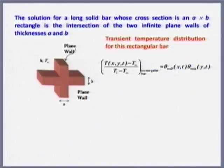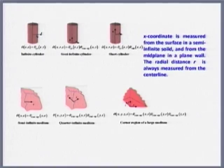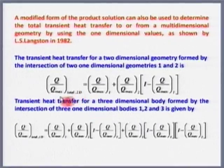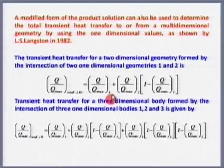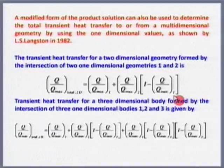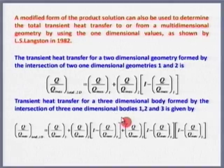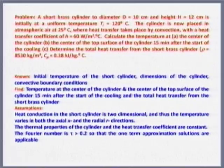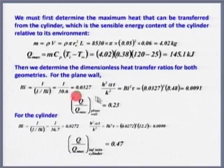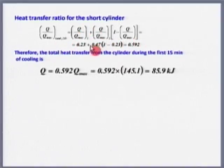Similarly, for total heat transfer in multi-dimensional geometries, Langston (1982) showed: Q/Q_max = (Q/Q_max)₁ + (Q/Q_max)₂ · [1 − (Q/Q_max)₁]. For three bodies a third term can be added. This is not 1+1=2; there is an interaction term. We know Q/Q_max for the plane wall and Q/Q_max for the infinite cylinder, and using this relation we can compute Q/Q_max for the two-dimensional case. I urge all participants to look at the printouts for various configurations.